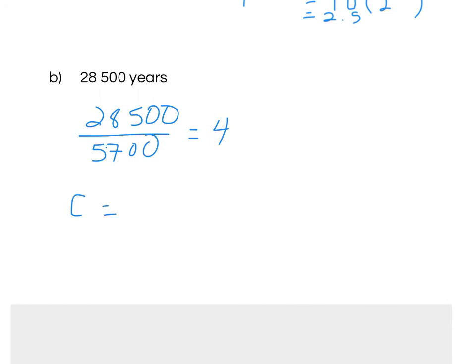So, C is equal to the original amount which was 10 grams and then I am halving the original amount four times. Alternatively, I could write that as 10 times 2 to the power of negative 1 to the power of 4 and then I could work out my answer there.